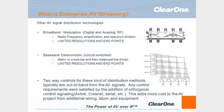Until recently, most AV signal distribution within the enterprise was using one of two technologies: either broadband RF-type modulation, or baseband — what we would call deterministic circuit switch — these are your matrix switches. The one main point we will discuss here is that for both of those technologies, any control requirements for either the source or any of the displays were what we would call out of band from the content or from the payload.